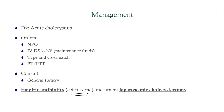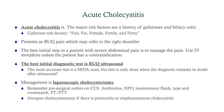Acute cholecystitis is a bacterial infection of the gallbladder, typically as a result of a gallstone that lodges in the cystic duct. The major risk factors are a history of gallstones and biliary colic, which this patient did have. The classic gallstone risk factors are the five F's: fair, fat, female, fertile, and 40 — it's a bit of a stereotype but it works, and the USMLE likes these stereotypes.